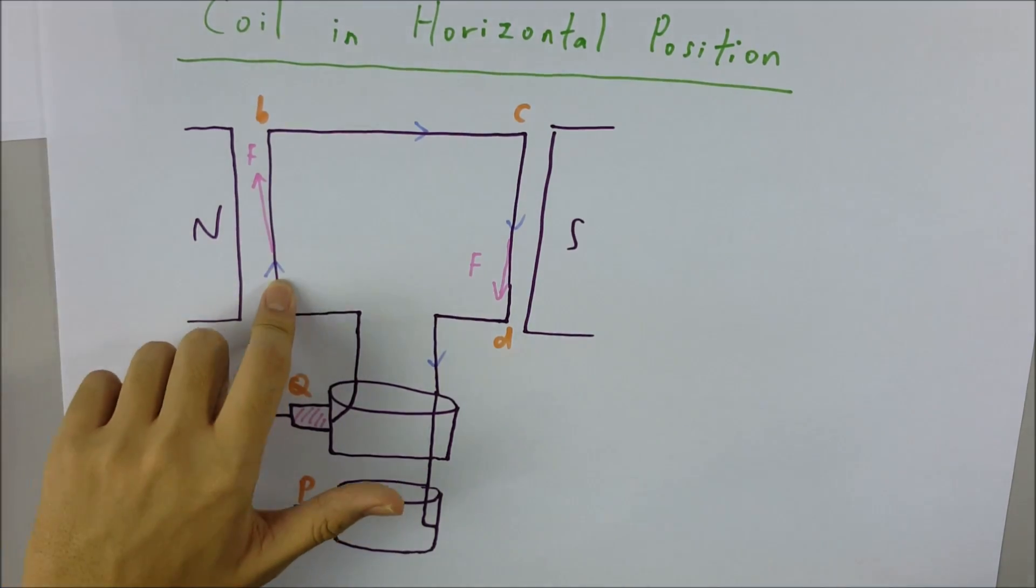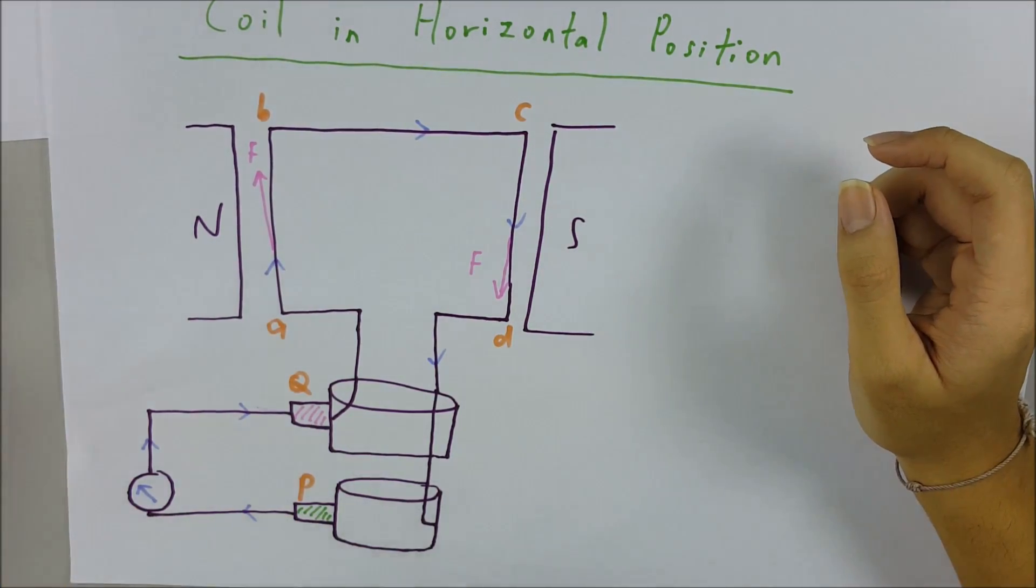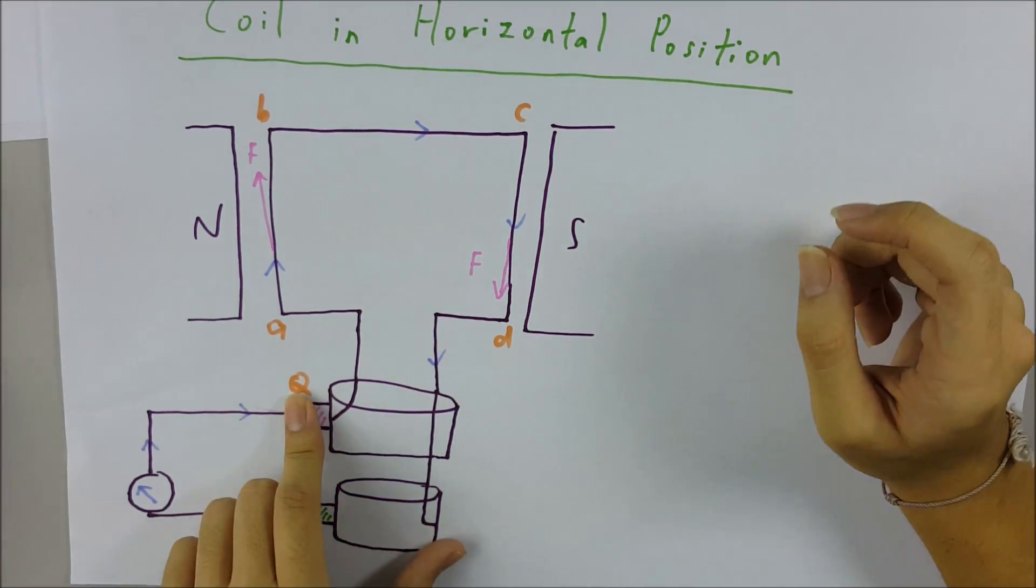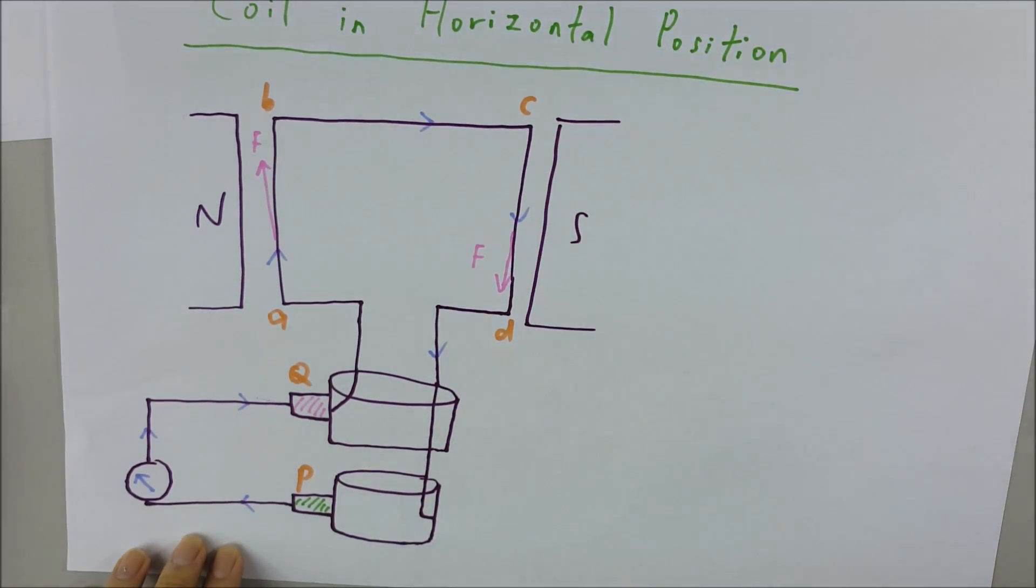In the external circuit, the current flows from brush P to brush Q. The galvanometer pointer deflects to the left, and the current at this instant is at maximum.